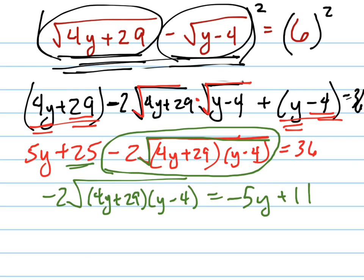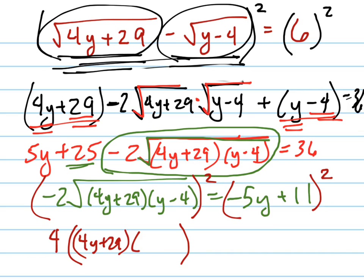Now I'm going to do that same thing that I did at the very beginning, but now this will work a little bit better, which is to square both sides of my equation. And when I square both sides, I get 4 times. Now this does take care of the square root. So 4y plus 29 times y minus 4.